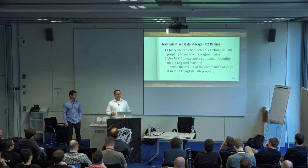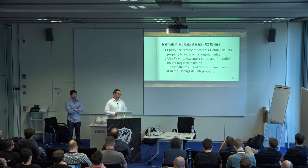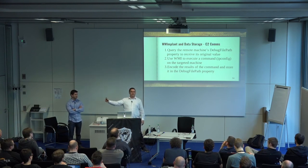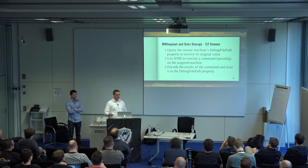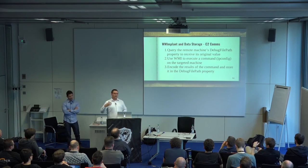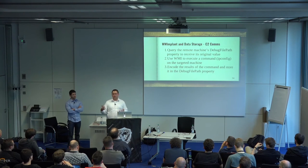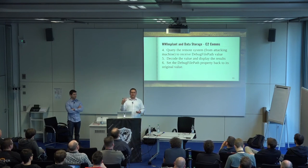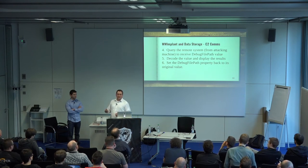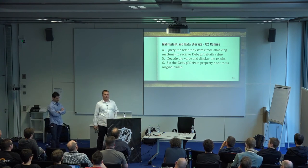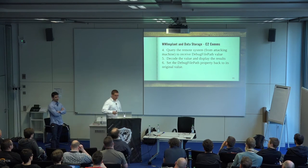This is everything we needed — a writable string property, writable in constrained language mode, doesn't blue screen the box when modified, and not fixed in length. We've actually gotten it up to 256 megs, and close to a gig on systems with larger memory capacity. So we were able to figure out our C2 methodology: query the original DebugFilePath property, get that original value, execute a command on the remote system via WMI — say ipconfig — encode results using the constrained language mode compliant encoder, and store on the remote system's DebugFilePath property.